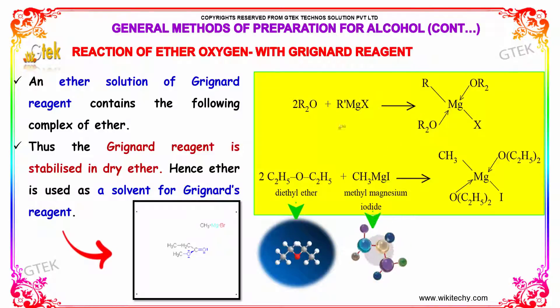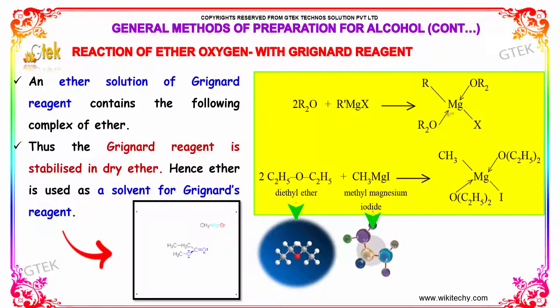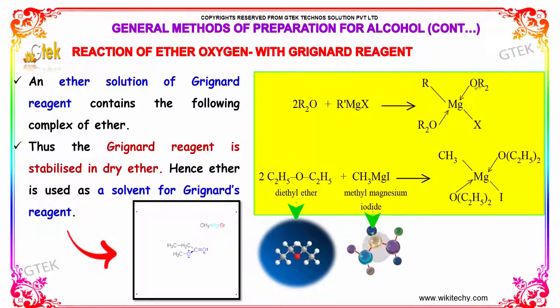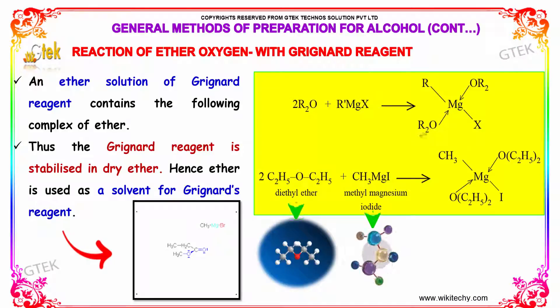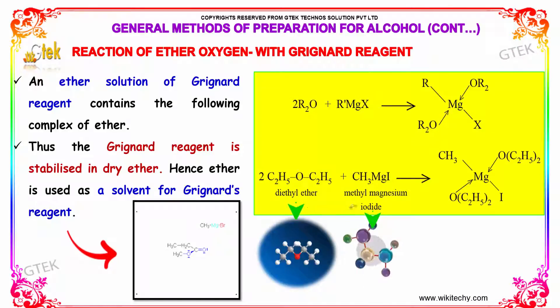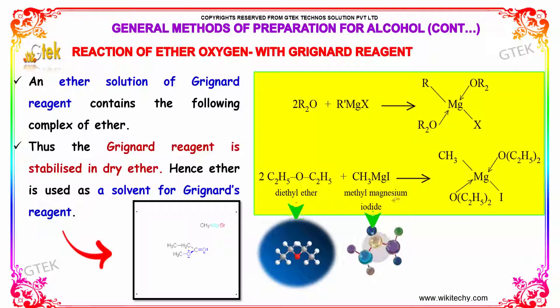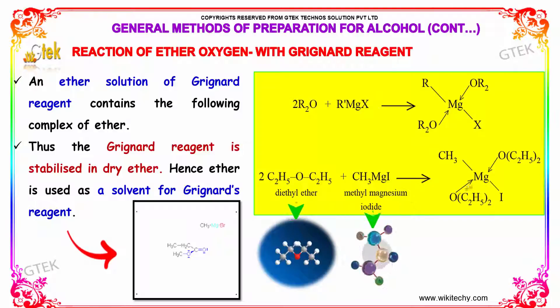R2O reacts with R-MgX to form the complex R-Mg(OR2)-X. That is, dimethyl ether reacts with methyl magnesium iodide to form the respective ether complex.